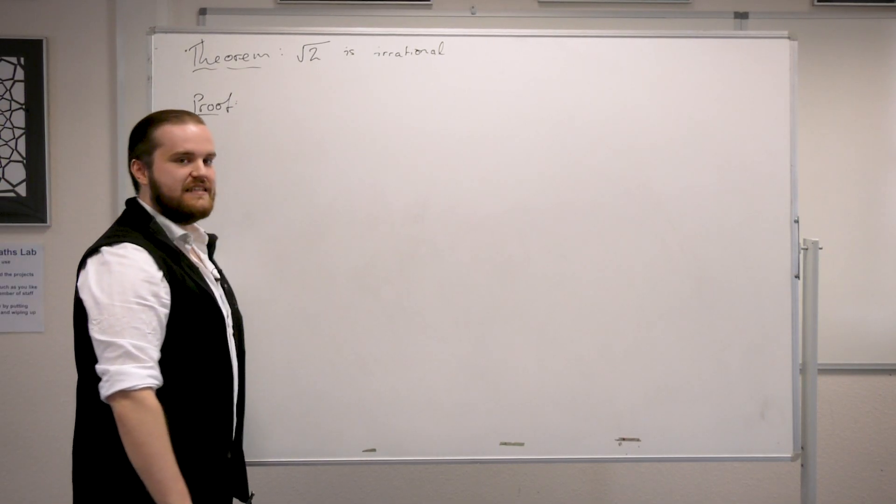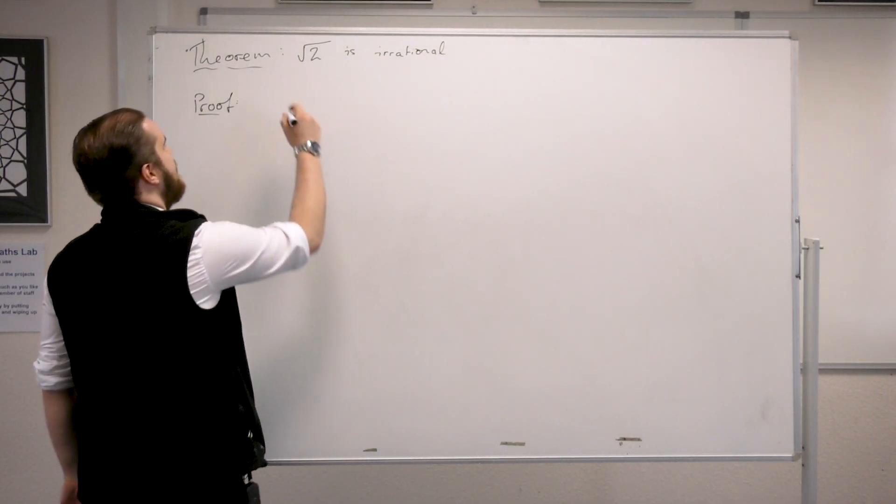Okay, so we'd like to prove that the square root of 2 is irrational and we'll do it by contradiction.